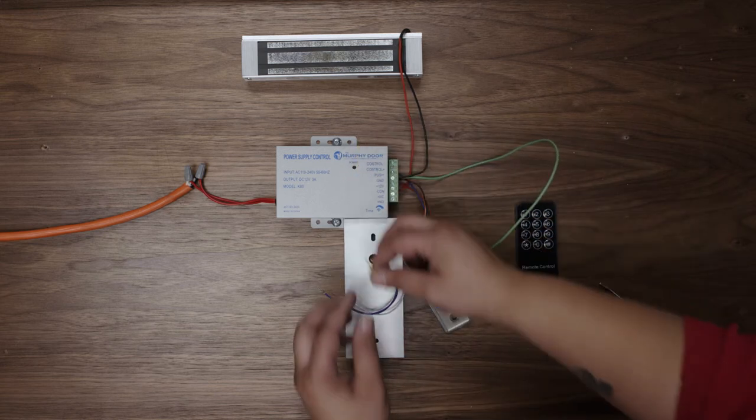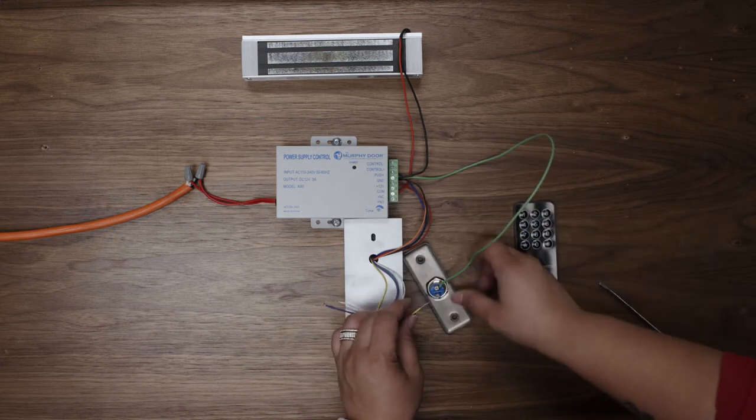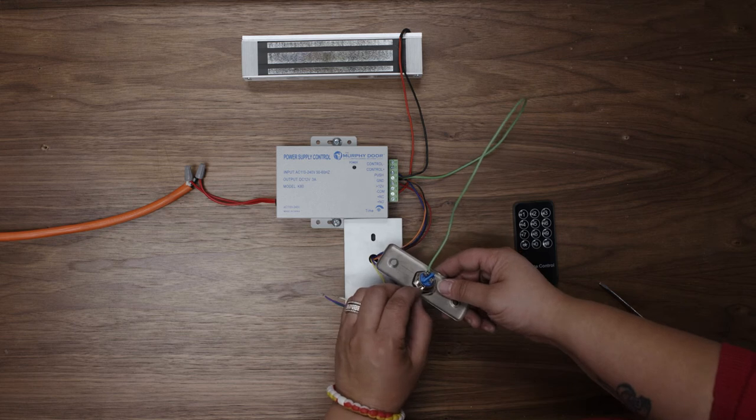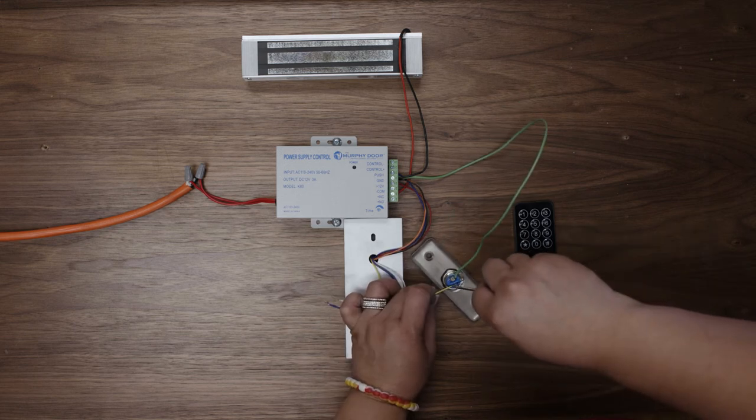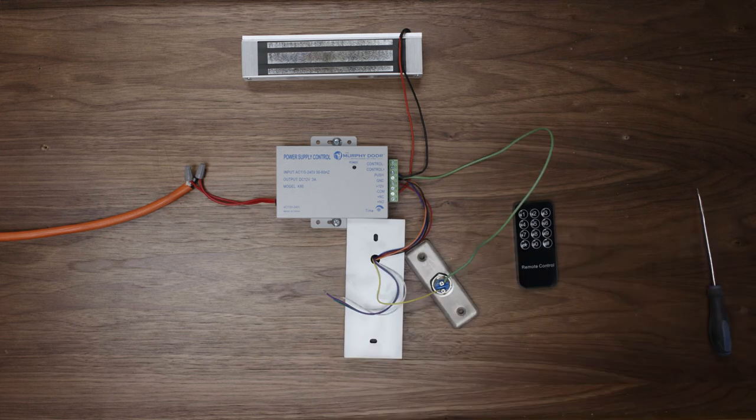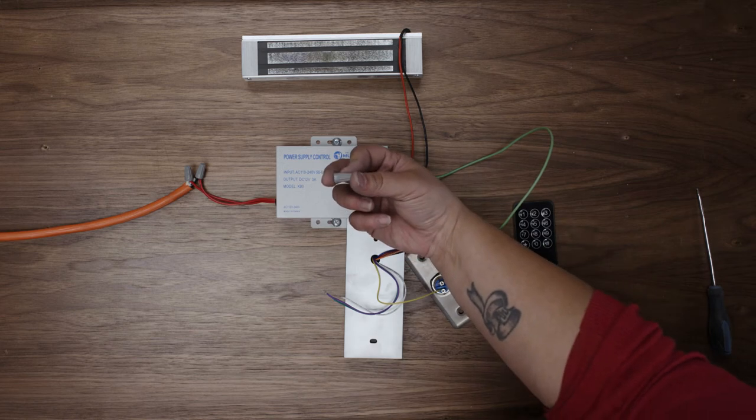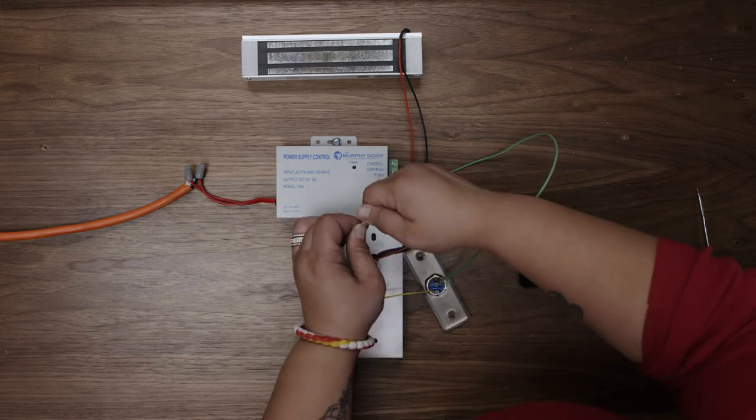The yellow wire on the scanner connects to the second terminal on the push button. The purple, white, and green wires are not used. Cap them with a wire nut.